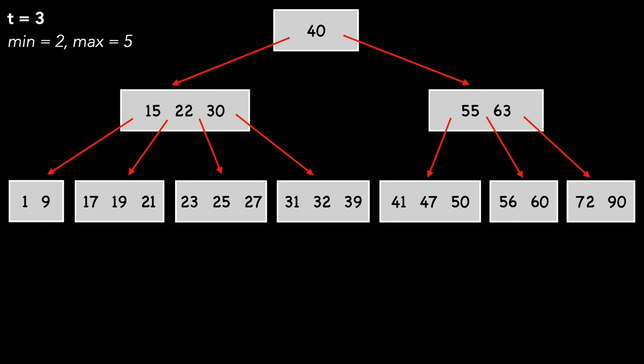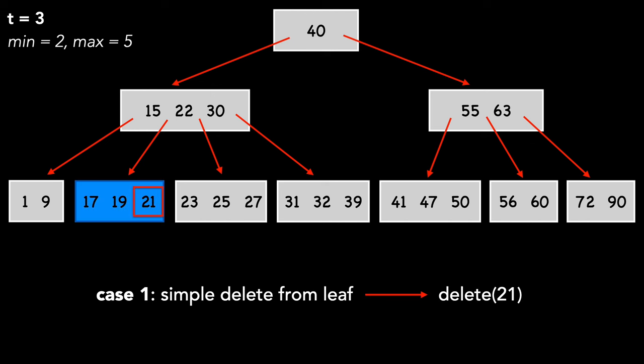There are three categories of cases we'll cover, with slight variations of each. Case 1 is a simple case where we delete a key from the leaf. Let's delete 21. Remember that our algorithm is coded in such a way that if we call delete on a node, it has at least T keys, one more than the minimum. For this situation, we simply remove the key from the node.